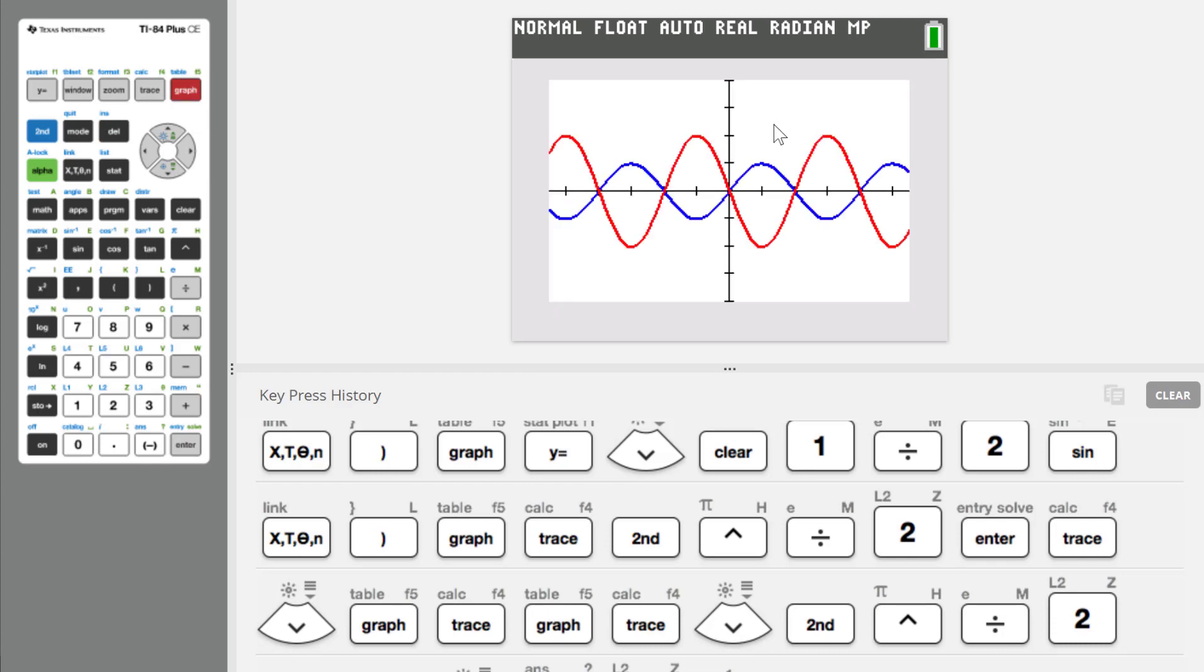Okay, well, now something different has happened. The blue is the original sine function. It looks like the red function has been turned upside down. Somebody took the blue function, and all the hills have become valleys, and all the valleys have become hills. This thing has been reflected across the x-axis.